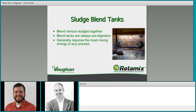After the blend tank and digestion, you'll have a digested sludge that's generally less viscous and lower percent solids, so tertiary processes past that will likely have lower mixing requirements — and they'll also be easier to mix because of the lower solids concentration and lower viscosity. Depending on load cycles, you may see large variation in sludge characteristics if you're not continuously feeding from all of the different sludge streams.